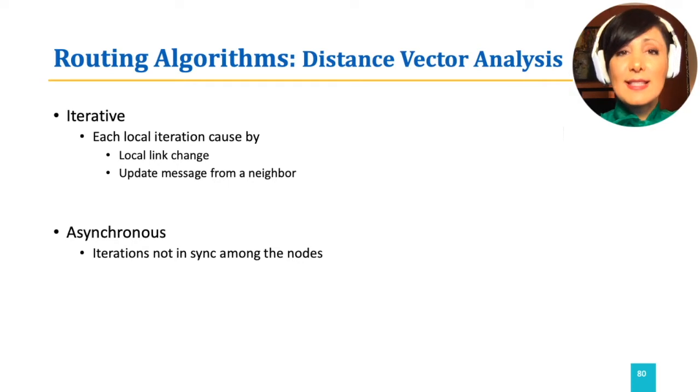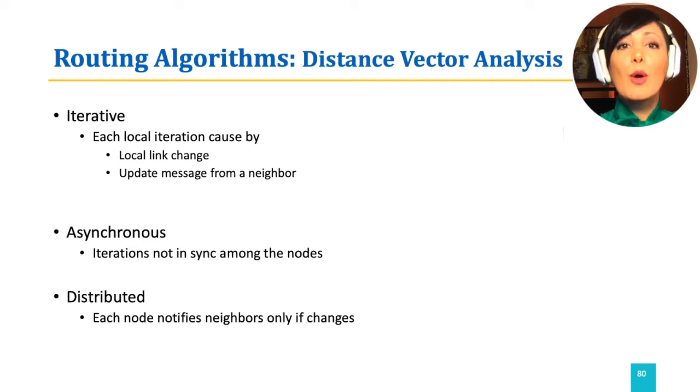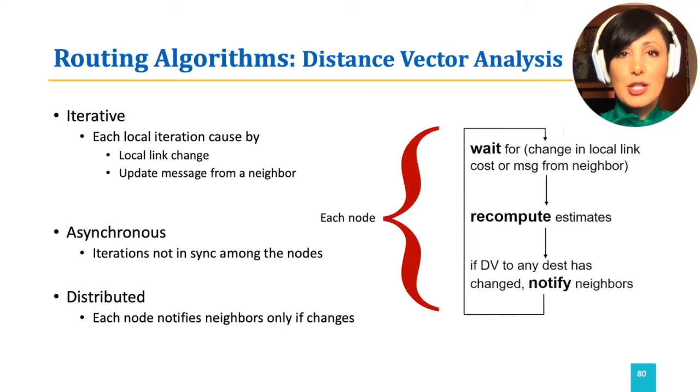They happen asynchronously. The nature of the algorithm is distributed. Each node works separately and notifies neighbors only if there are changes. Each node waits for changes. If the change happens, it recomputes its estimates, and if the distance vector to any destination changes, it notifies the neighbors. And this process continues while there are changes in the network.